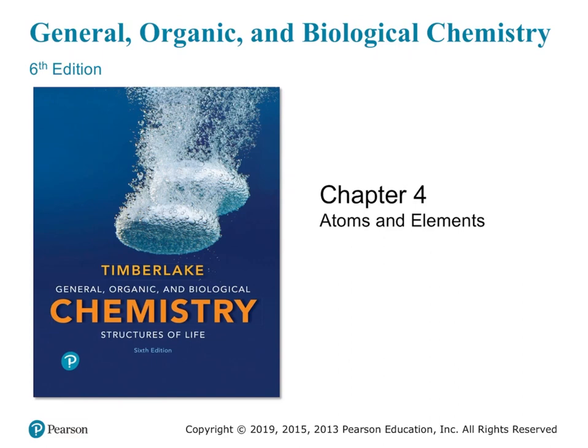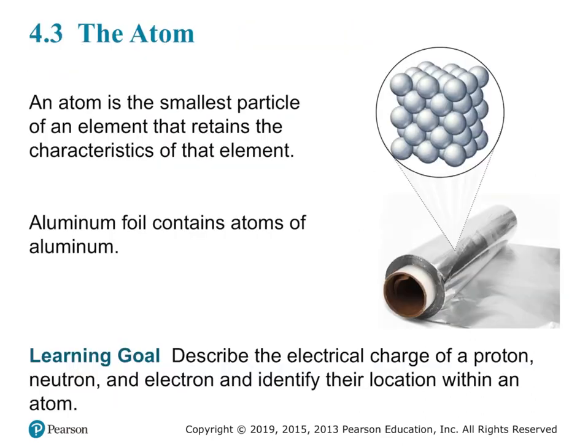Today we're going to talk about the atom. The atom is the smallest particle of an element that retains the characteristics of that element. For instance, if we had a sheet of aluminum foil made of pure aluminum, and if we were able to zoom in on the smallest part of aluminum, we would see the atom.